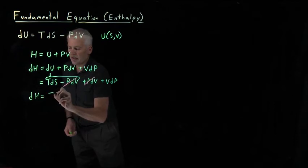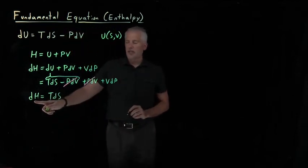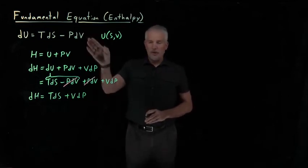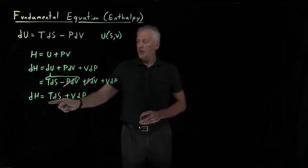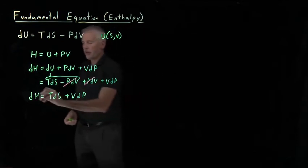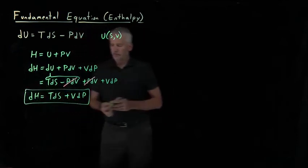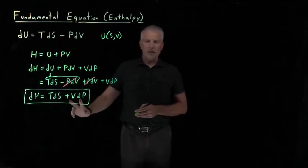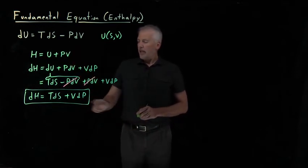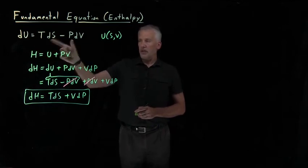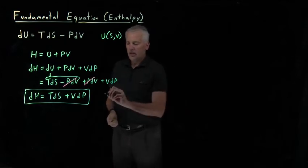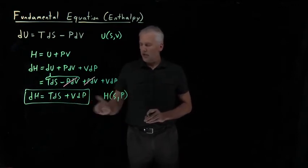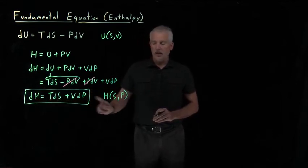What we're left with is just the statement that the differential change in the enthalpy, dH, is equal to T dS plus V dp. This is the fundamental equation for the enthalpy. It differs from the fundamental equation for the internal energy only in the last term — they both have T dS as the first term, but then we have plus V dp rather than minus p dV. Just as the internal energy has natural variables S and V, this expression tells us that the natural variables of the enthalpy are the entropy and the pressure — H is a natural function of S and P.